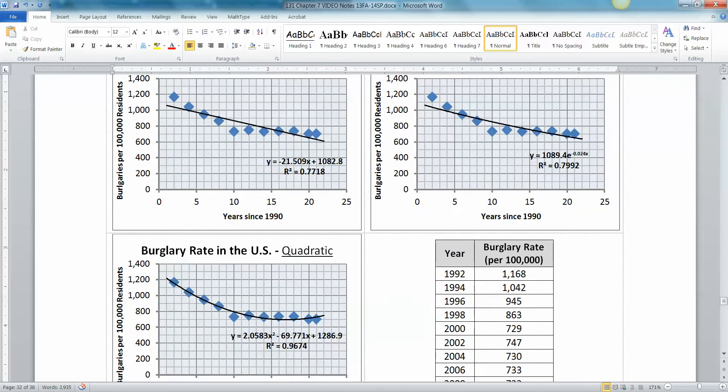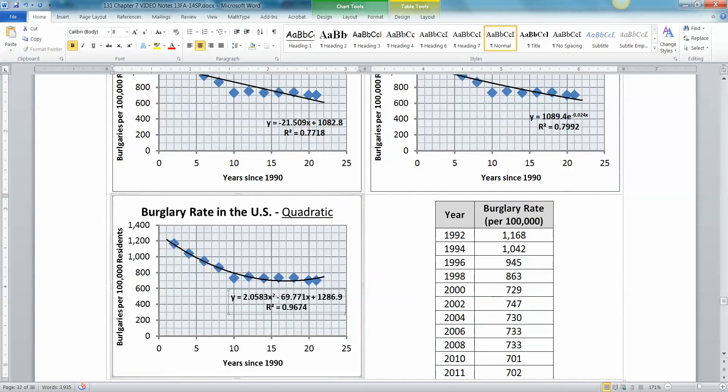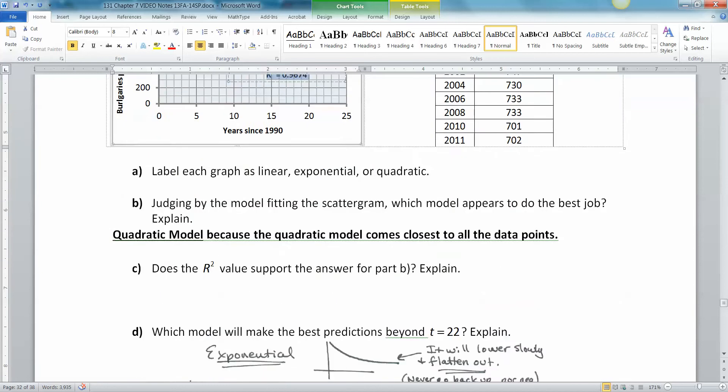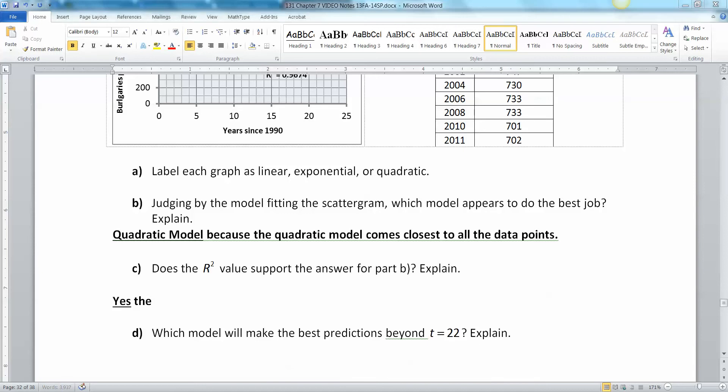Does the R squared value support that? Look at your three R squareds. Remember, you want your R squared value to be high. We have 0.77, 0.799, and 0.967 right here. That is the highest one, so yes, the R squared value for the quadratic model was the highest. The quadratic model appears to be best.